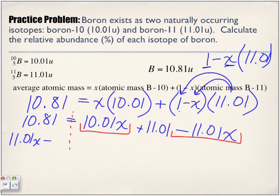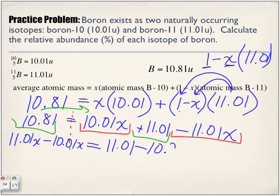This 10.01x is positive on this side of the equal sign, but when I move it on this side it becomes negative. I'm going to keep this term here on this side, and which means I'm going to move this term on that side, and I'm going to get 11.01 minus 10.81.